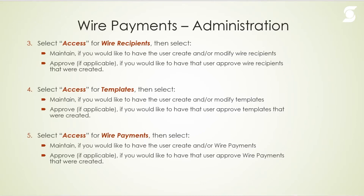If the wire recipient feature requires an approval, you can select that approval box as well. Then go down to Templates, because you can group a wire beneficiary and an intermediary bank into a template — select 'Access' and 'Maintain' for templates. Finally, select 'Access' and 'Maintain' for wire payments for users who will create payments, and if they will also be an approver, select 'Approve' as well.